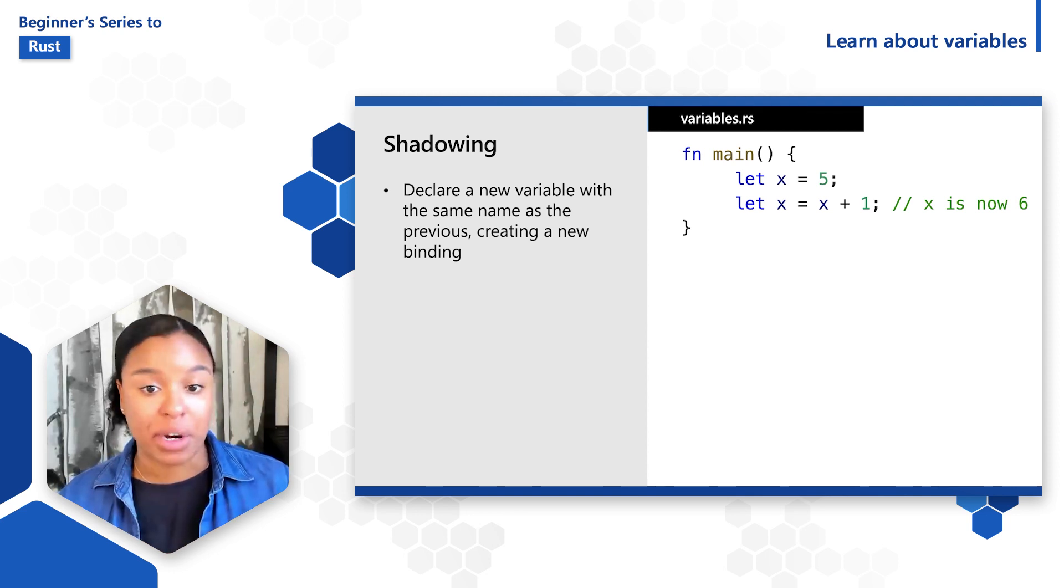Then we can declare another variable named x with a different value. For example, let x is equal to x plus 1. What happens here is that the variable x binds to a value of 5. Then x is shadowed by taking the original value and adding 1 to it so the value becomes 6.